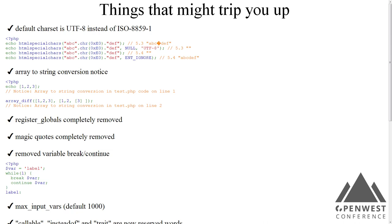Register globals is now completely removed. We turned it off by default about eight years ago, but you could still force it back on in your INI. Now even if you try to turn it back on, the code is not there anymore. Magic quotes are completely removed as well. We also removed variable breaks and continues — if you're doing 'continue $var' and var is set to something weird, it's not going to work. It was a pretty strange thing to do anyway.